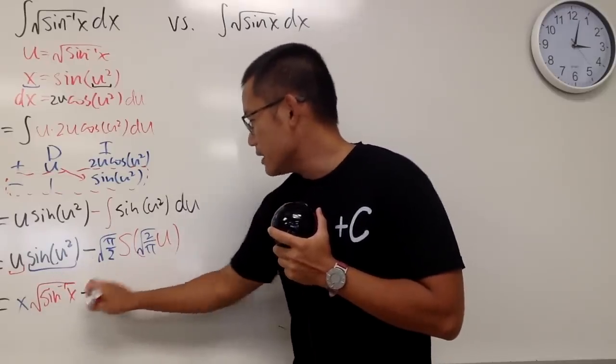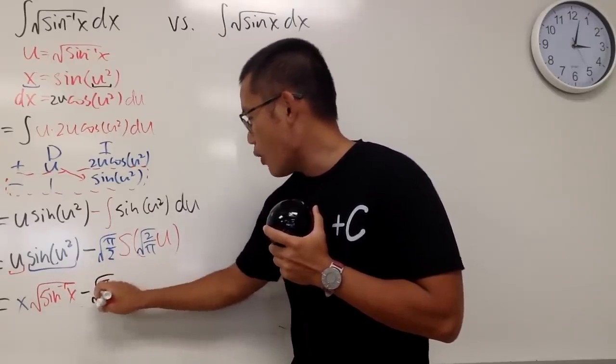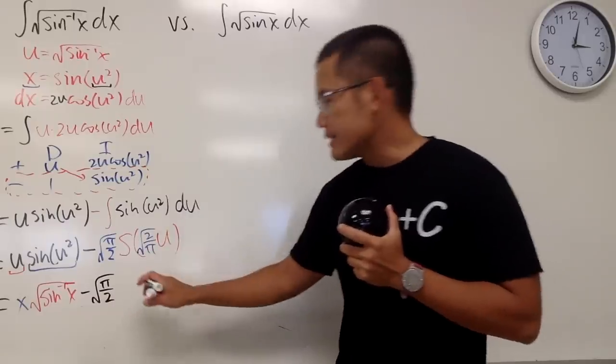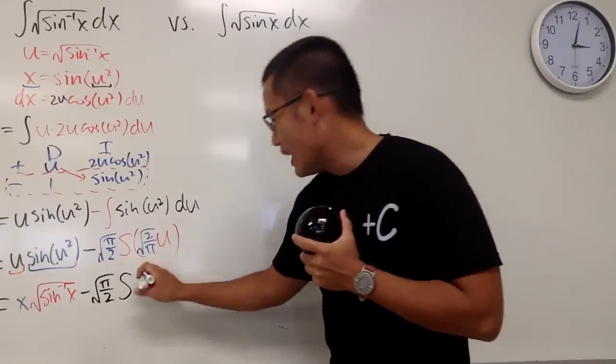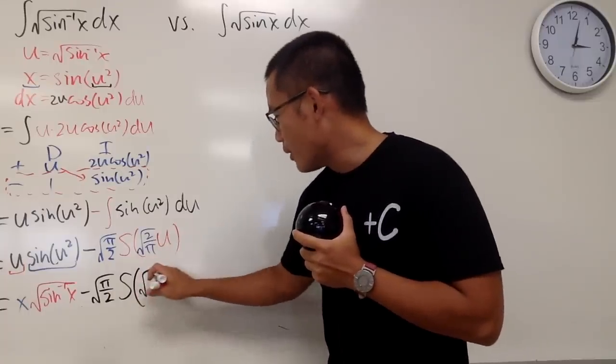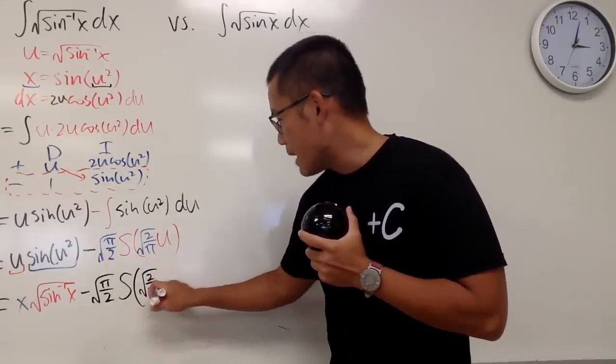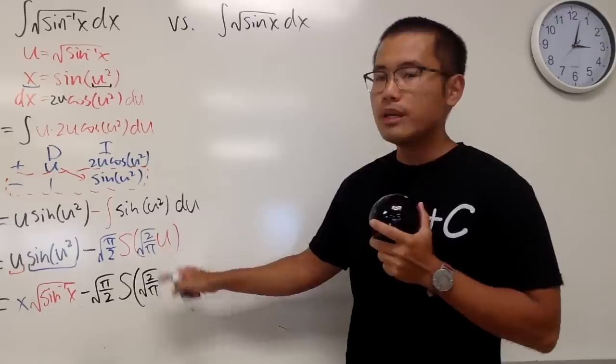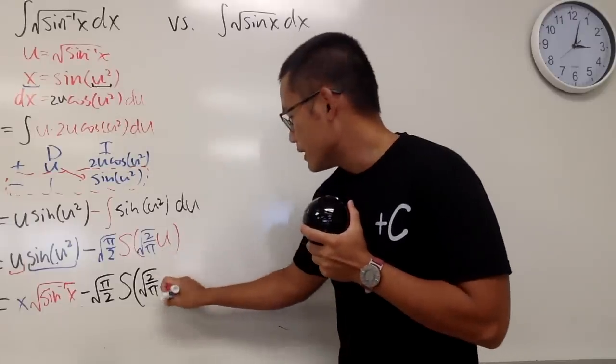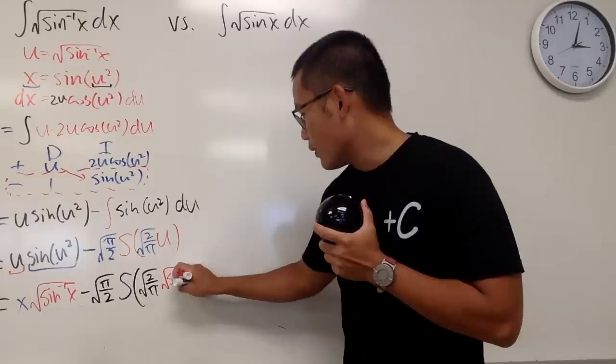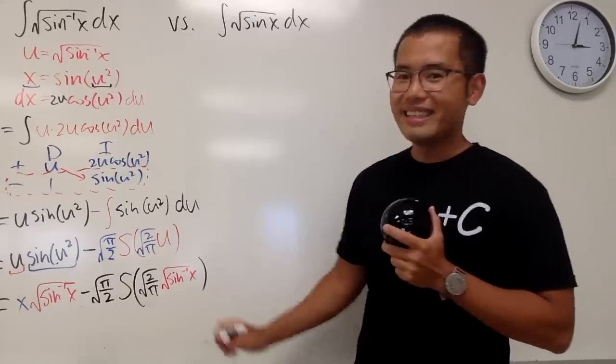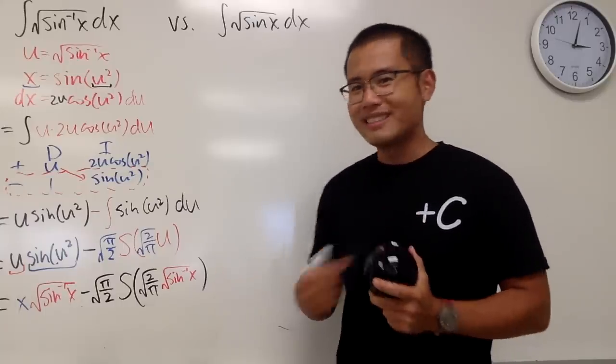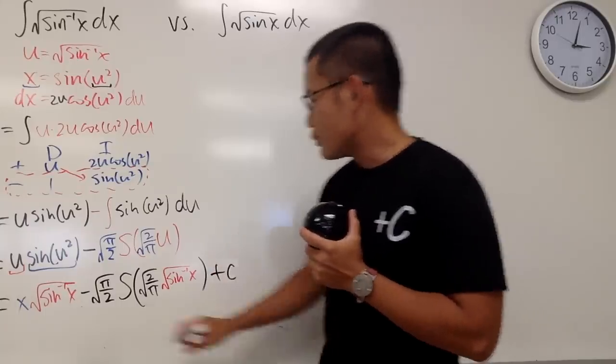Here we have the minus, and the square root of pi over 2, and we have S, and this is just the name of the function. This is not an integral symbol. And we have the parentheses, this constant multiple, square root of 2 over pi, and again, the u is square root of inverse sine x. So, I know it looks crazy, but this is it. And in the end, of course, don't forget the plus c. So I'll just add the plus c right here,